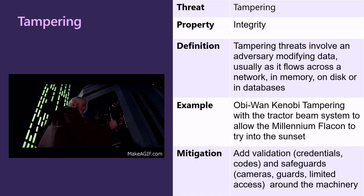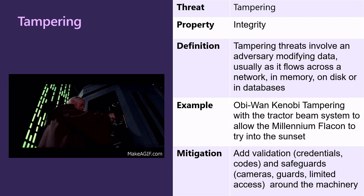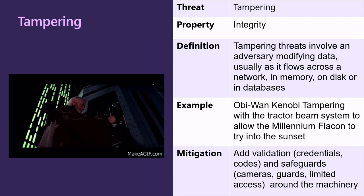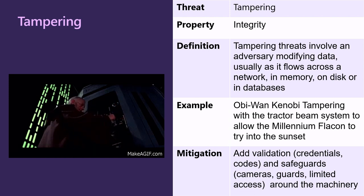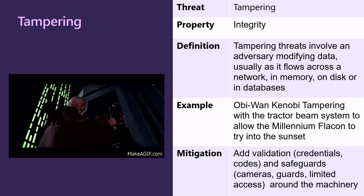T stands for Tampering — a property of integrity. Tampering threats involve an adversary modifying data as it flows across a network, in memory, on disk, or in databases. In our example, Obi-Wan Kenobi tampering with the tractor beam system to allow the Millennium Falcon to fly to safety. Potential mitigations could include adding validation such as credentials, codes, and safeguards — cameras, guards, and limiting access to this machinery to potentially mitigate against tampering.